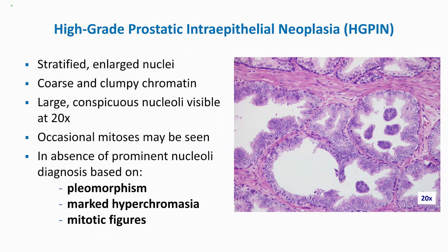Here is an example of high-grade prostatic intraepithelial neoplasia. There is stratification of the nuclei, nuclear enlargement, and a more coarse, clumped chromatin pattern. Nucleoli are usually visible at 20x magnification, and this is one of the criteria I use to make a diagnosis of high-grade PIN — probably one of the most common criteria used by most genitourinary pathologists. Occasional mitoses may also be seen, and a diagnosis can be made in the absence of prominent nucleoli if nuclear pleomorphism, marked hyperchromasia, and mitotic figures are present.